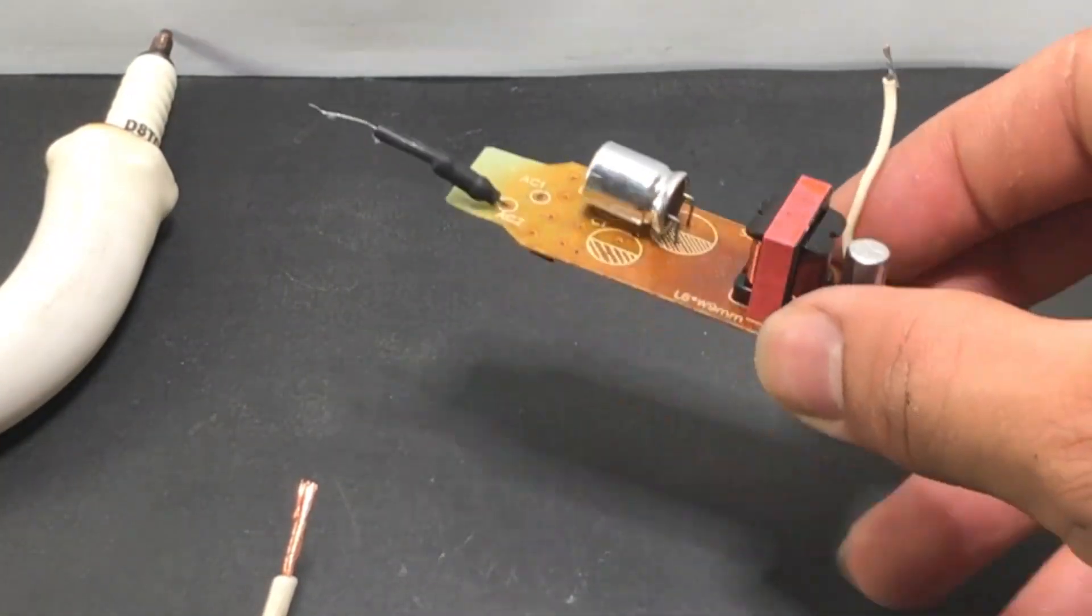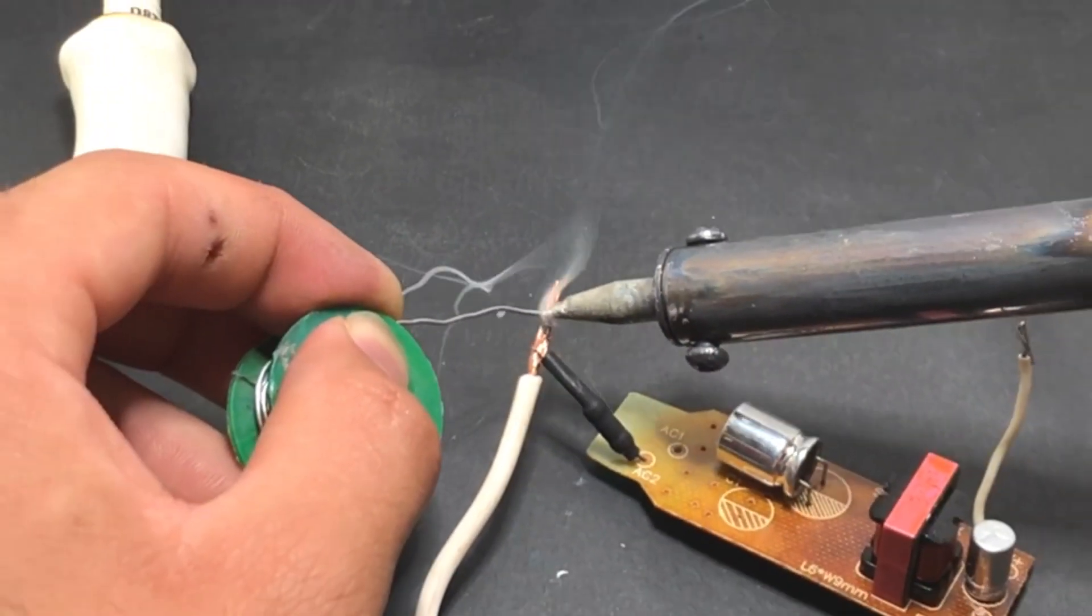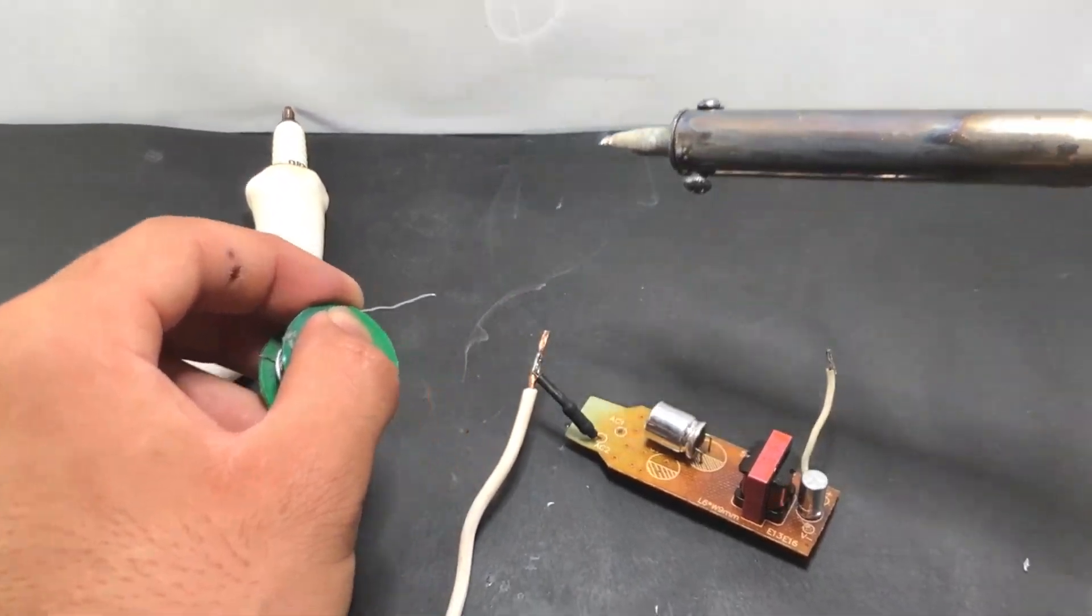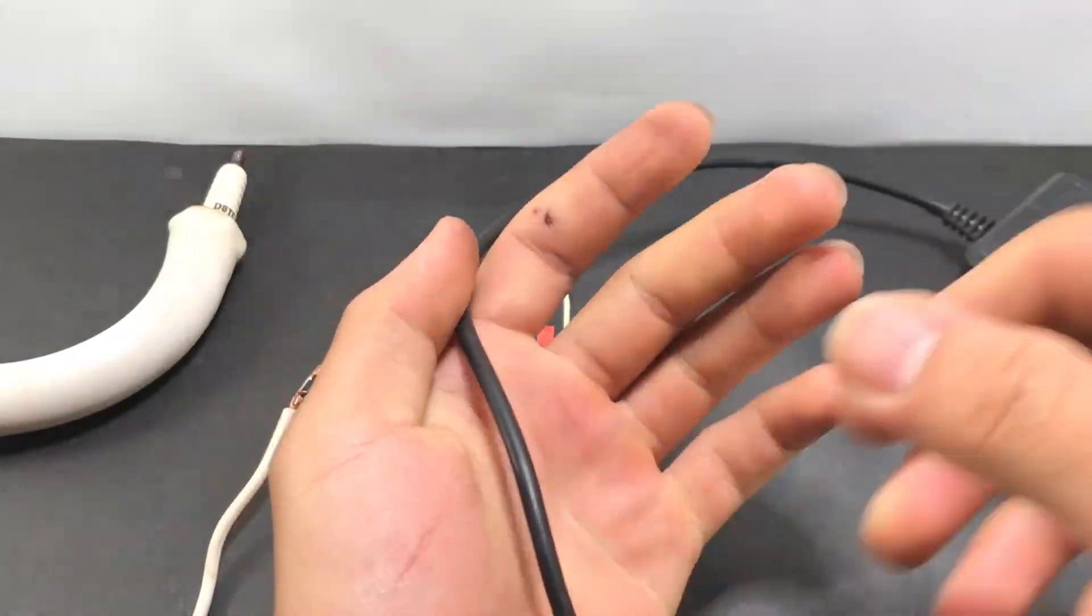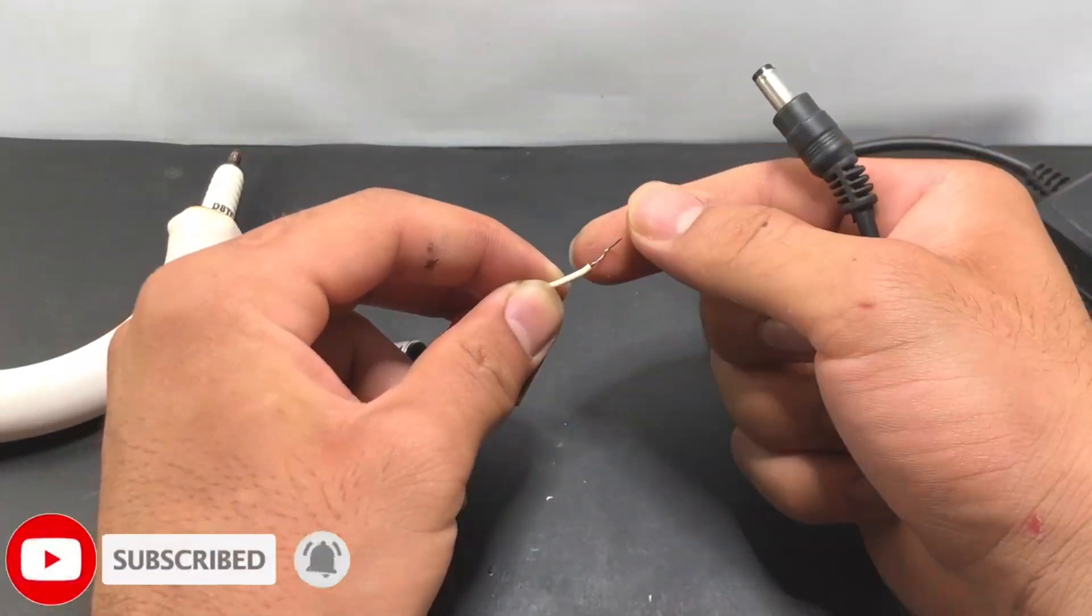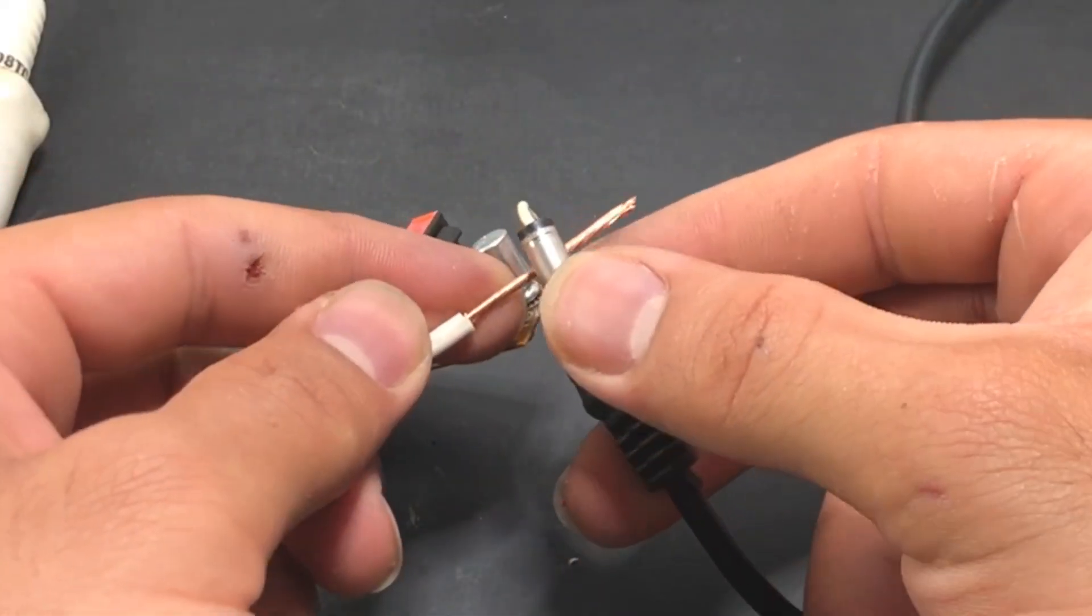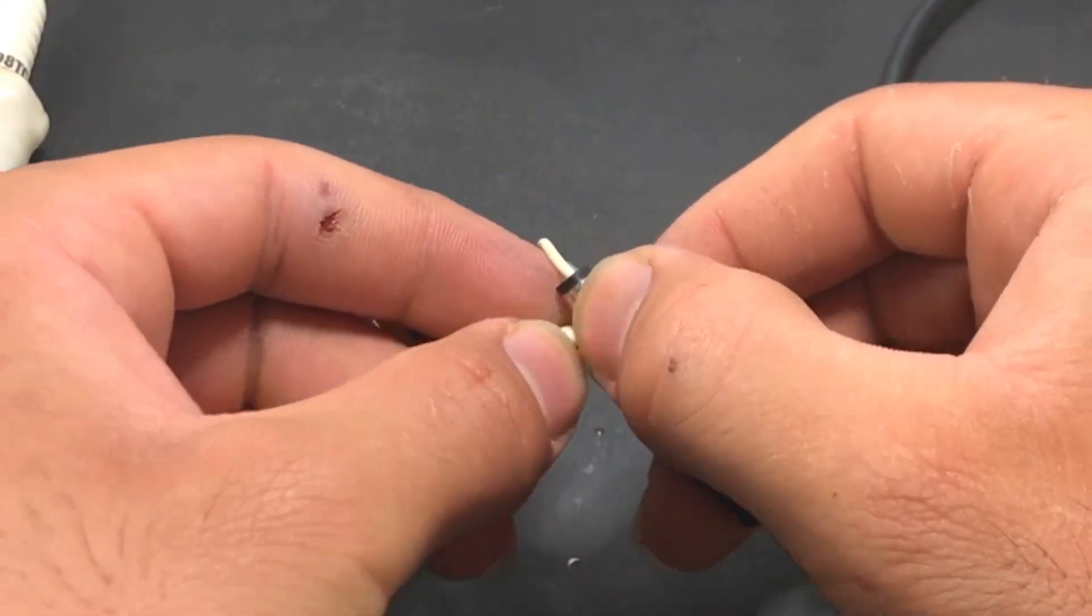We connect an ampere increasing circuit to the positive wire. We connect the positive wire to the laptop adapter, and we also connect the negative wire.